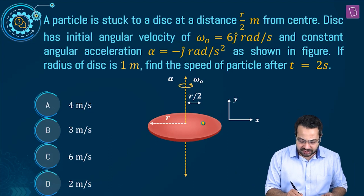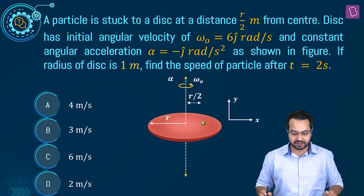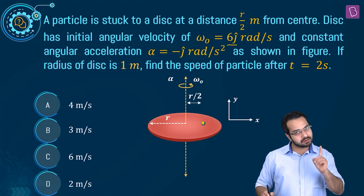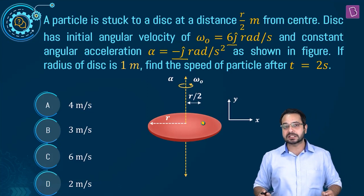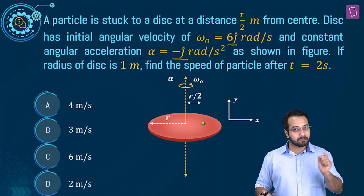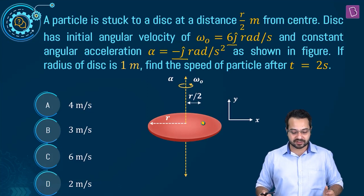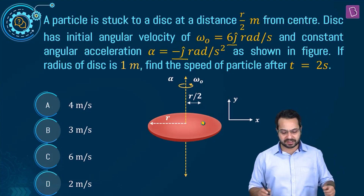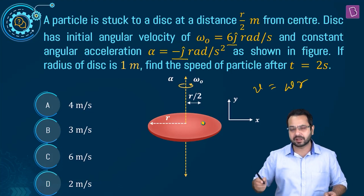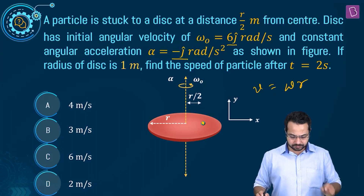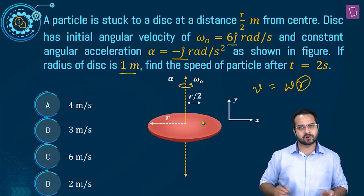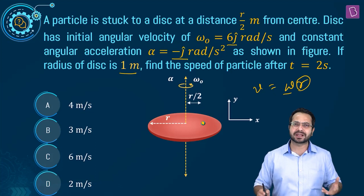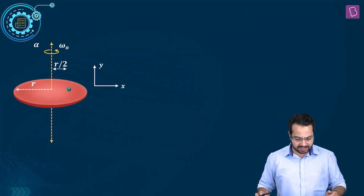We have a disk, and a particle is stuck at a point at a distance r/2 from the center. It has an initial angular velocity 6j — 6 is the magnitude and j is the direction — and it also has alpha which is minus j, meaning 1 is the magnitude and minus j is the direction of angular acceleration. We have to find the speed of the particle after 2 seconds. For any particle in circular motion, speed is simply omega times r, the distance from the axis.